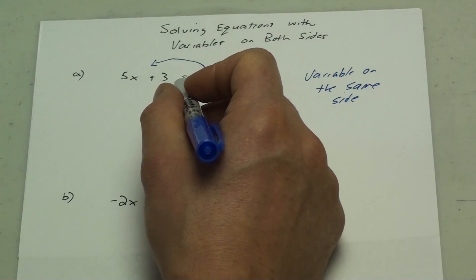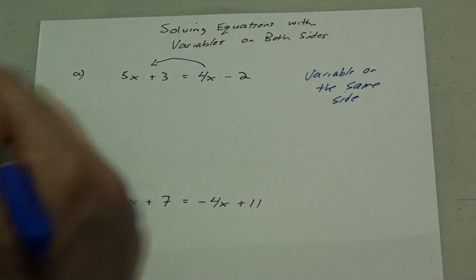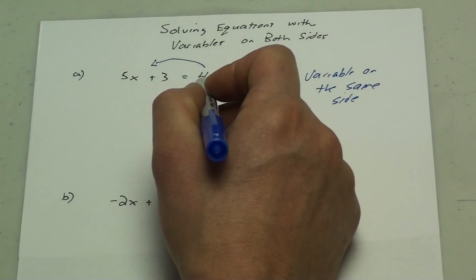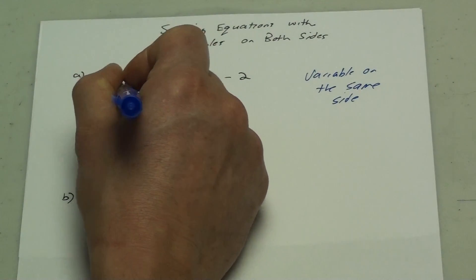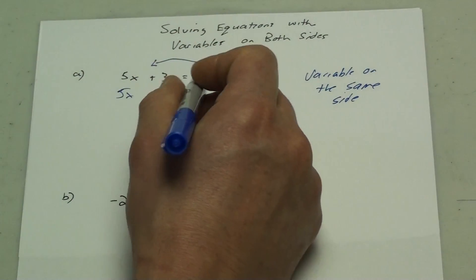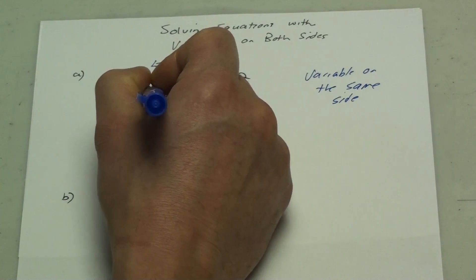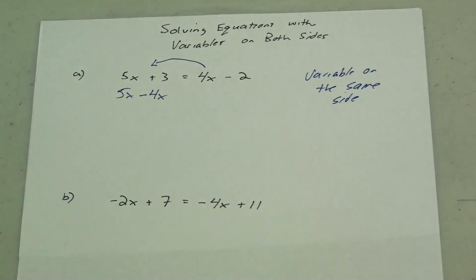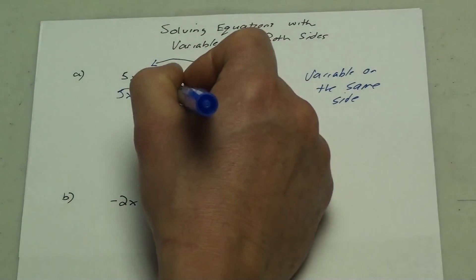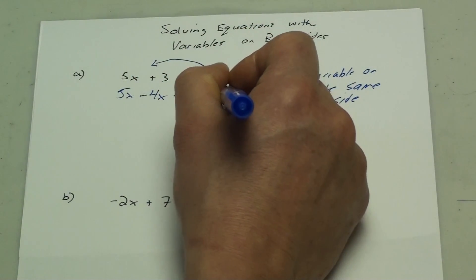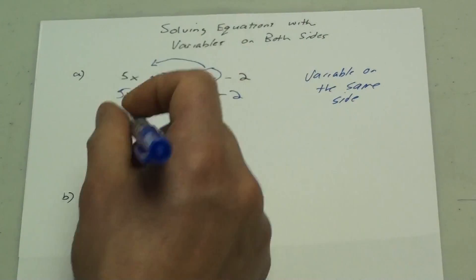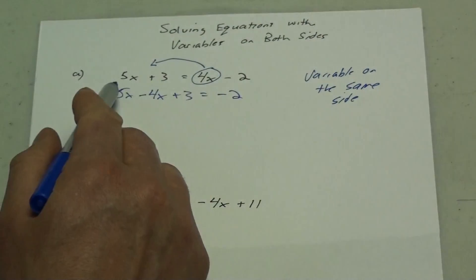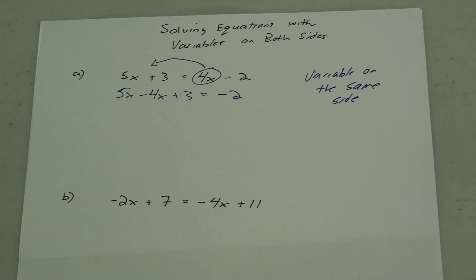When it crosses the equal sign, it turns into its opposite. This is a plus 4x. When it moves across the equal sign, it turns into a minus 4x. So I have 5x, and that plus 4x turns into a minus 4x, still plus 3 equals, and now I'm just left with my minus 2. I just move that plus 4x over to the other side and it turns into a minus 4x.